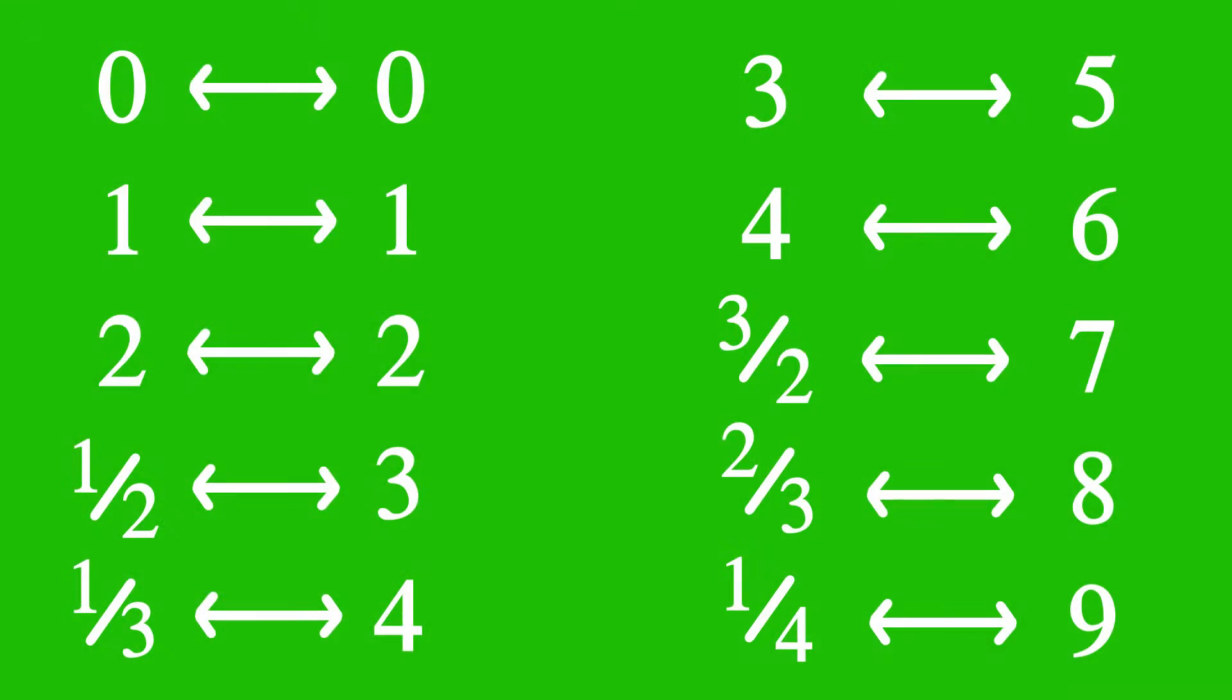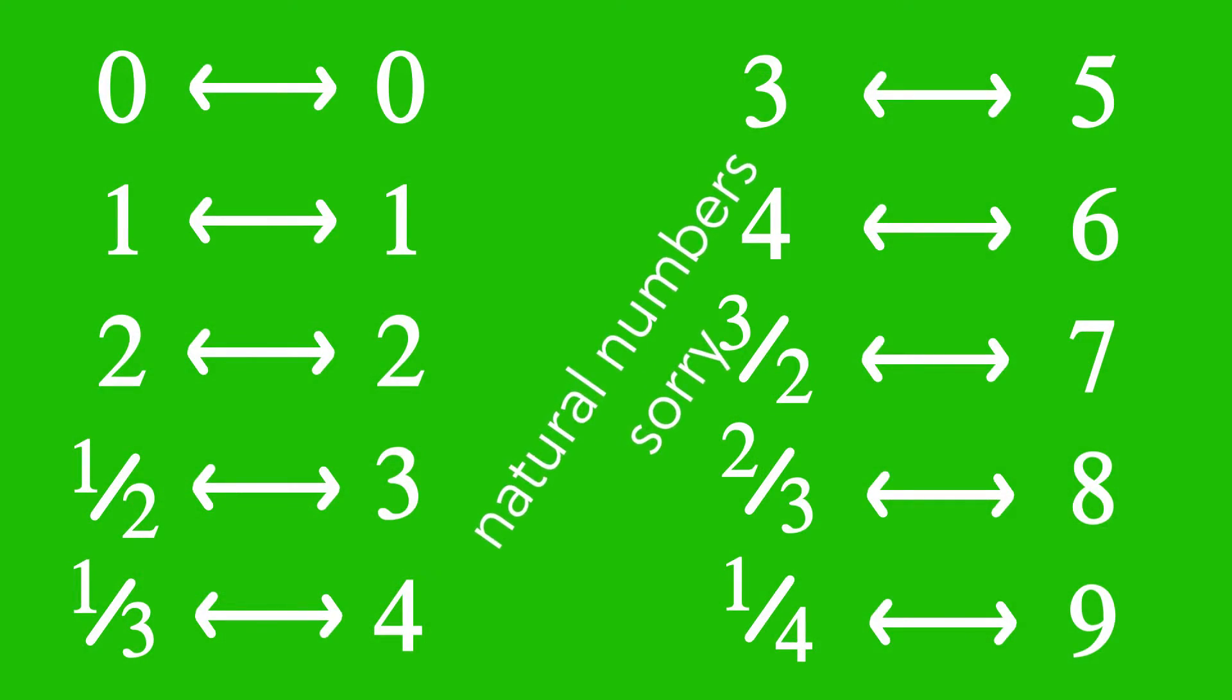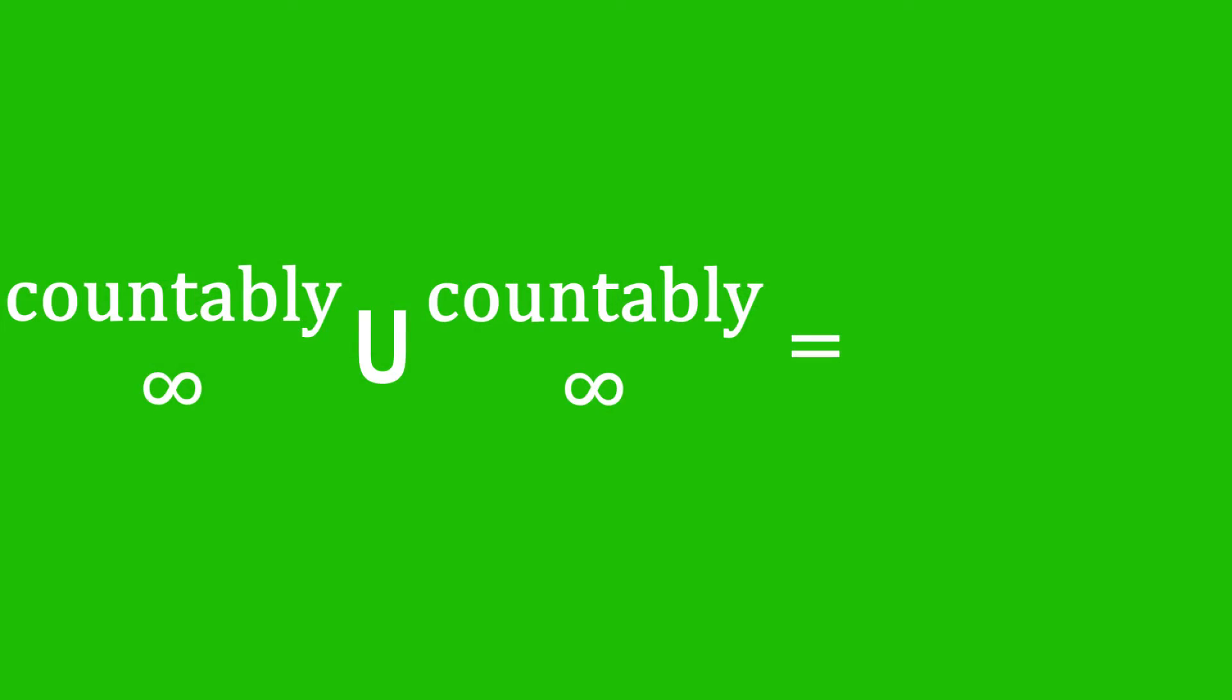In fact, the rational numbers are what we call countably infinite. That means that we can put them into a one-to-one correspondence with the integers. The real numbers are uncountable, meaning that they can't be. To the layman, this means that there are a load more real numbers than there are rational ones. Like, way more. It's also straightforward to show that the union of two countably infinite sets is still countably infinite.